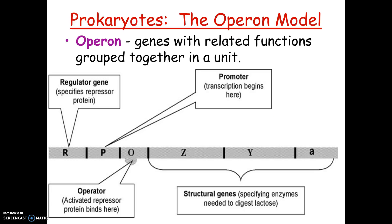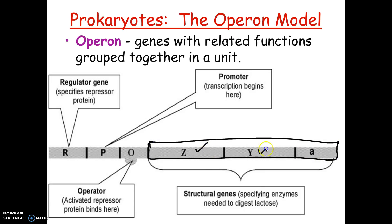We've studied more than anything else prokaryotes, or bacteria, and they use something called the operon. An operon is a group of genes that have related functions, grouped together in one package unit. For example, the genes shown here are the genes for digesting lactose — it requires three different enzymes, so it's convenient to have all three genes in a row in the same area.